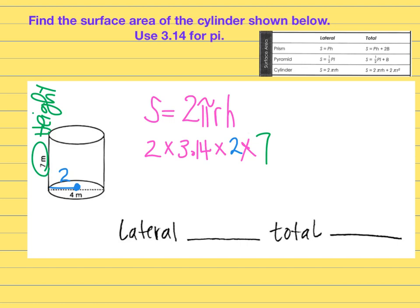I'm going to type all of this in my calculator at once one time and when you do you would end up getting the answer of 87.92 and areas measured in square units. So my final answer would be 87.92 square meters for lateral surface area.